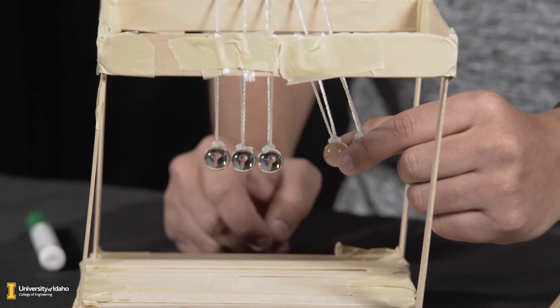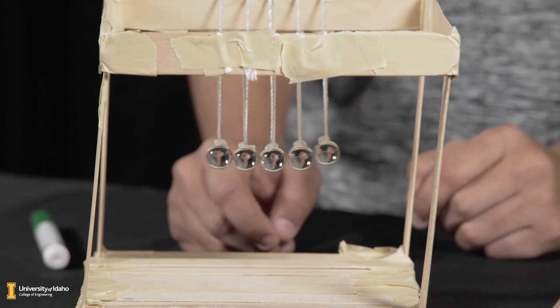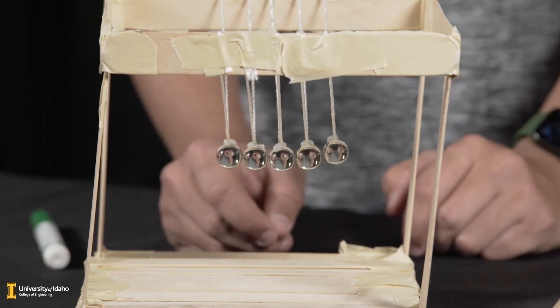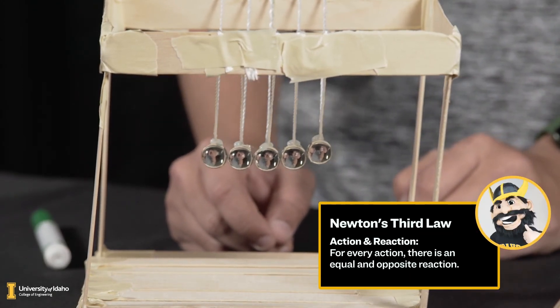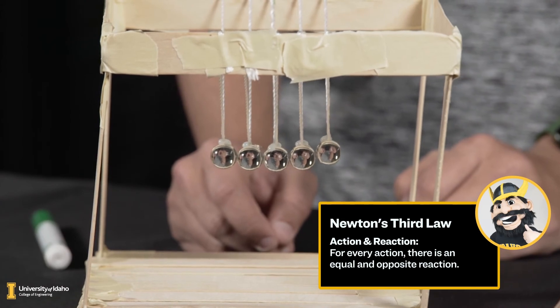If we move two marbles, we can see two marbles move on the other end. This is Newton's Third Law, that for every action, there is an equal and opposite reaction. You can also find more information and real-life examples of how the concepts you learned in this video relate to real-life engineering solutions.